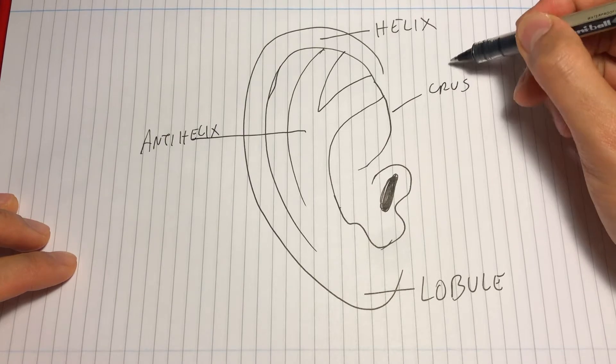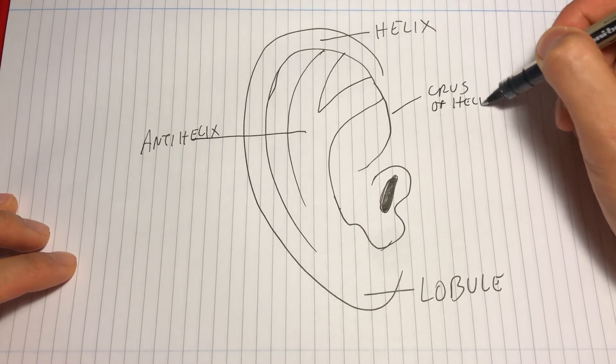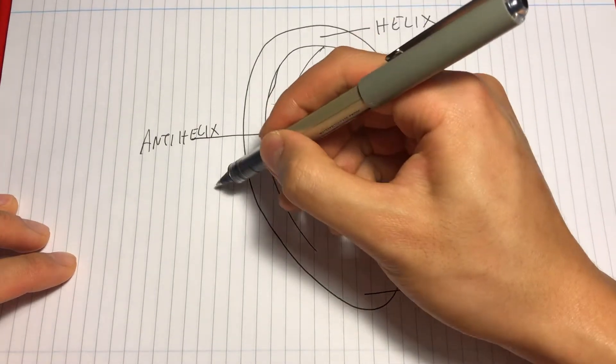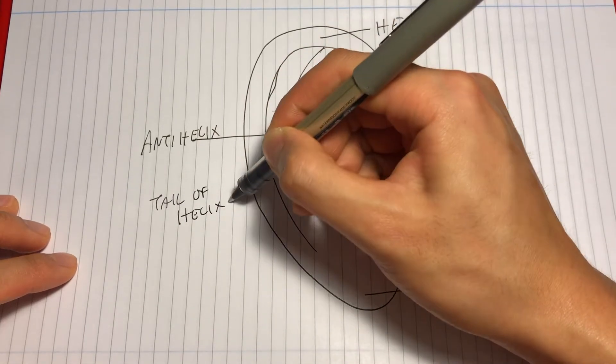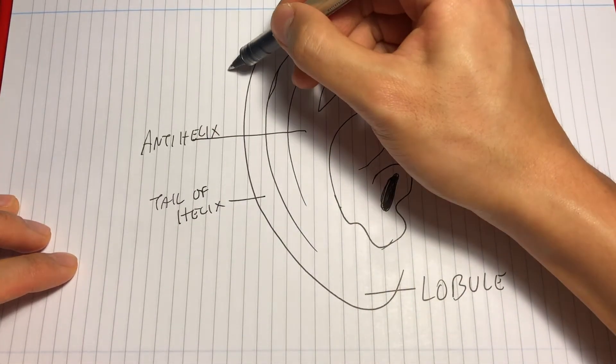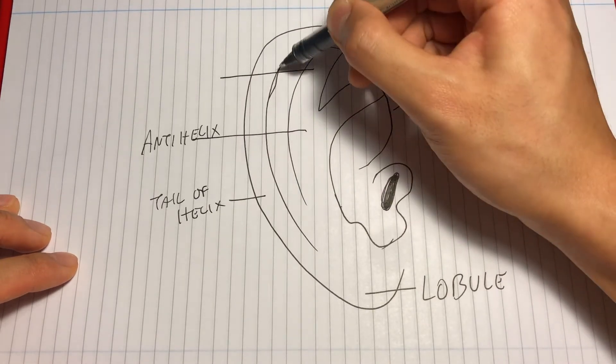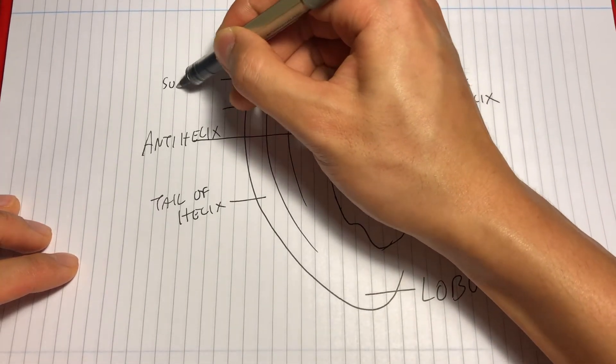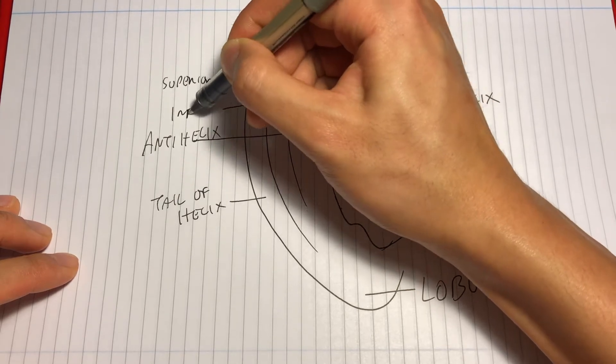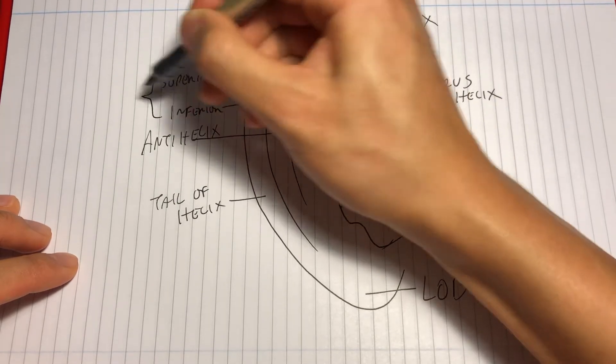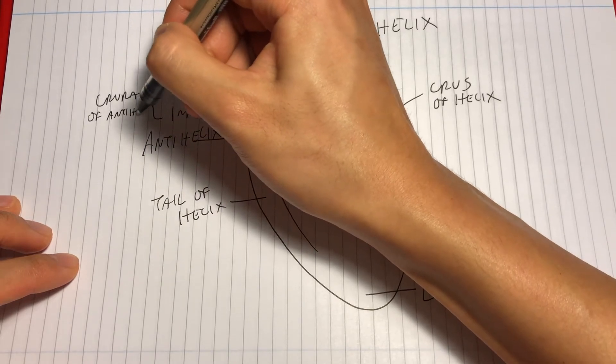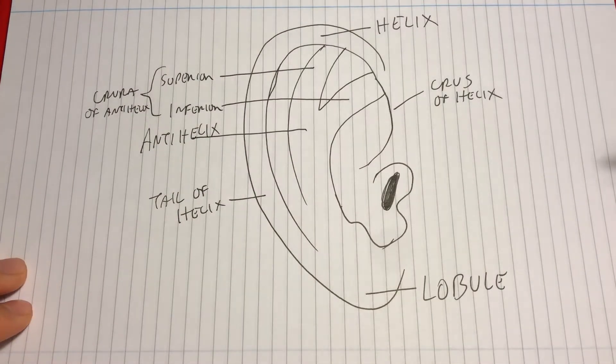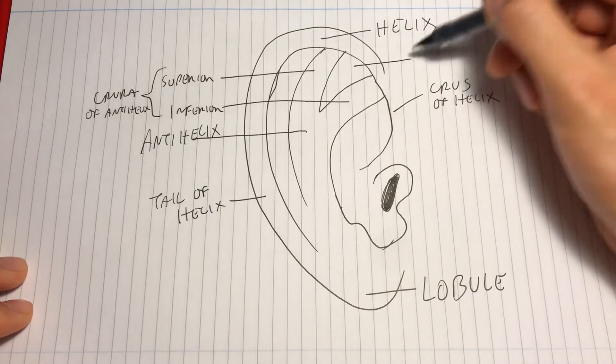Near the attachment to the face is the crus of the helix, where it begins, then curves around the rim and ends in the tail of the helix. The anti-helix has a superior and inferior crus. And in between these is the triangular fossa. Between the anti-helix and the helix is the scaphoid fossa.